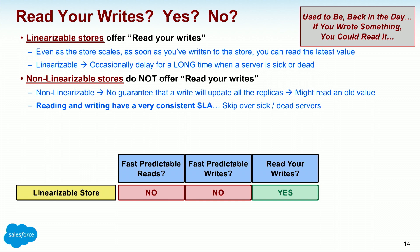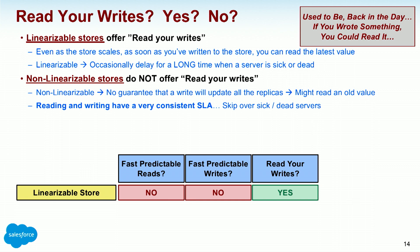Non-linearizable stores do not offer read your writes — no guarantee the write updates all replicas, you might read an old value. But reading and writing have very consistent SLAs, skipping over sick or dead servers. The Dynamo system from 2007 SOSP: you write and it finds three servers to write to. If one is slow or sick, it keeps going around to find another. 99-plus percent of the time you'll find the new value on read; less than one percent you'll get the old value. But it always reads fast and always writes fast — and there are business cases for which that's better.